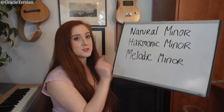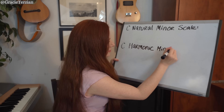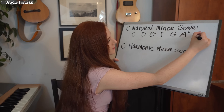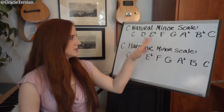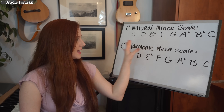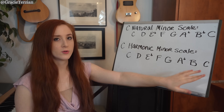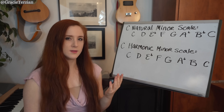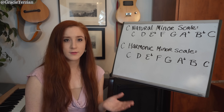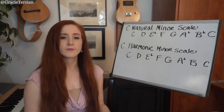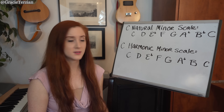Let's look at how the natural minor scale differs from the harmonic minor scale. Here's a C natural minor scale and a C harmonic minor scale. If we analyze the notes, the only note that's different between them is B-flat versus B-natural. All other notes are the same. We say that the harmonic minor scale has a raised 7th degree compared to the natural minor scale, meaning the 7th note has been raised up by one half step — from B-flat to B-natural.